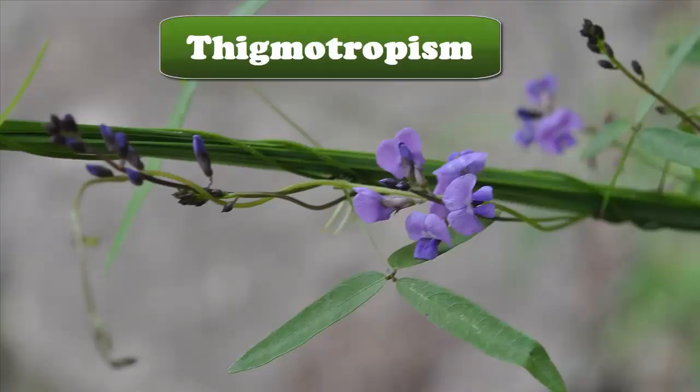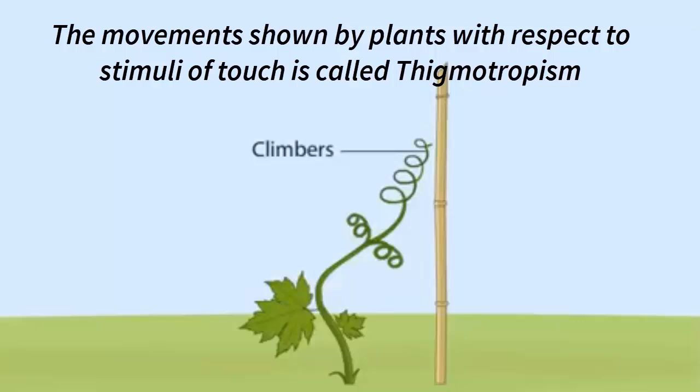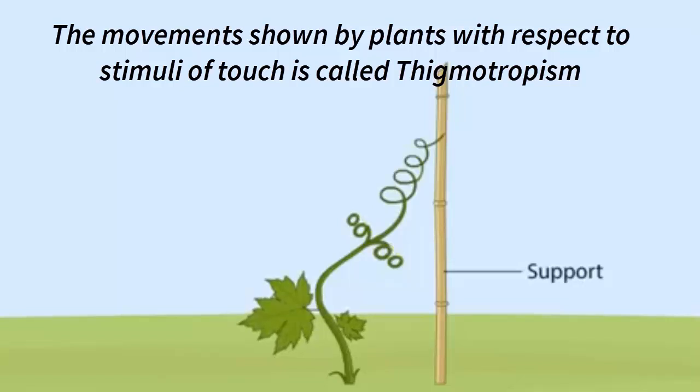Thigmotropism: the movements shown by plants with respect to the stimuli of touch is called thigmotropism.